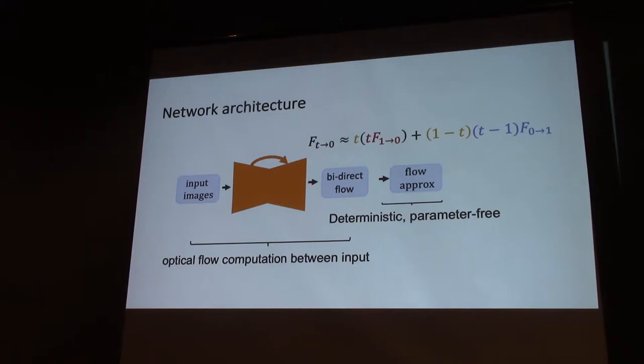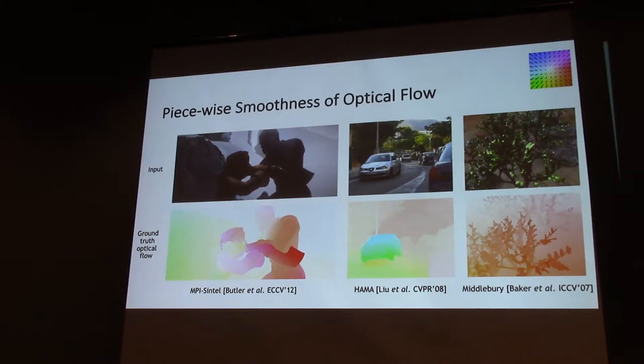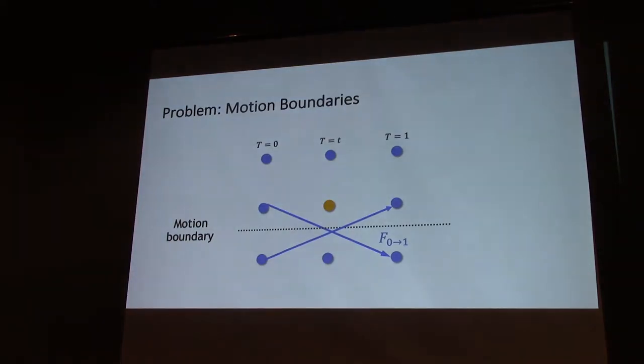Now I've talked about how to find correspondences to input images, but it relies on implicit assumption that the motion field or optical flow is smooth, meaning adjacent pixels have similar optical flow values. But in practice, optical flow is piecewise smooth, so the smooth assumption is broken near motion boundaries. Let's go back to the toy example. Here, this is a motion boundary, so the optical flow motion field is not smooth anymore. We can see for a pixel at time t, we have two contradictory approximations. This is problematic - by simply fusing, we can get inaccurate estimation for the intermediate.